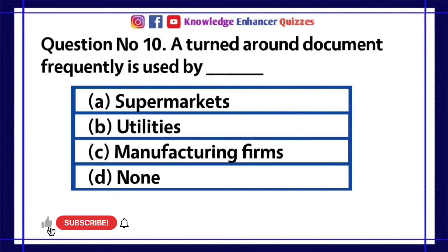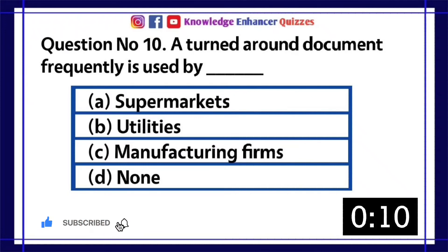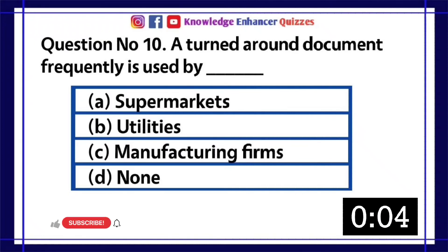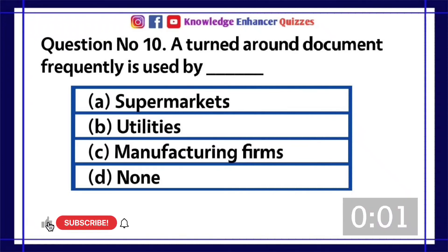Question number 10. A turned around document frequently is used by dash? A. Supermarkets. B. Utilities. C. Manufacturing firms. D. None. Option B is the right answer.